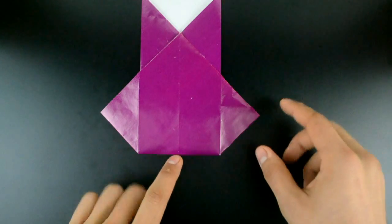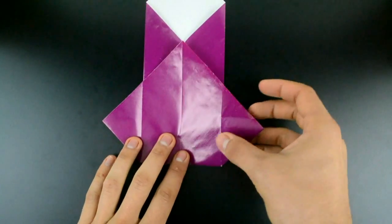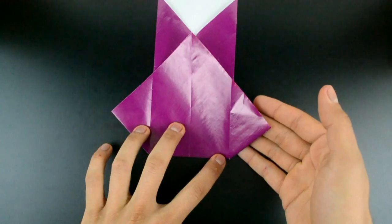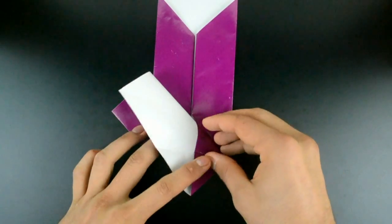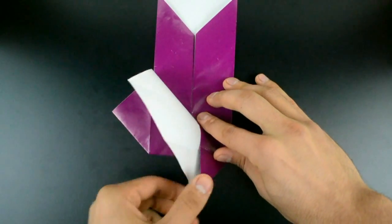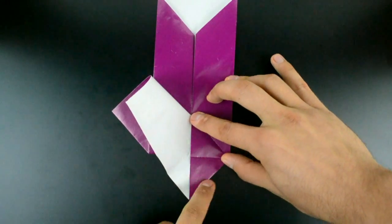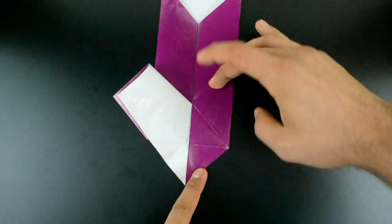And now a little attention. We need to bring the right side down as much as possible. Until the limit. And make a crease. Just flatten here.